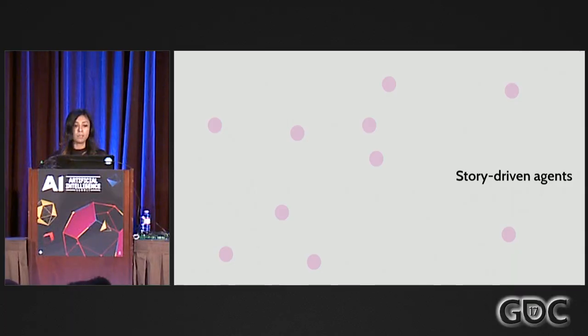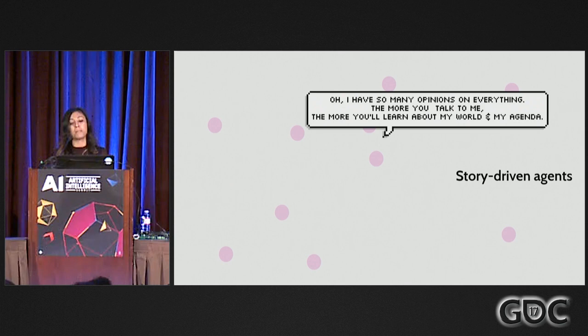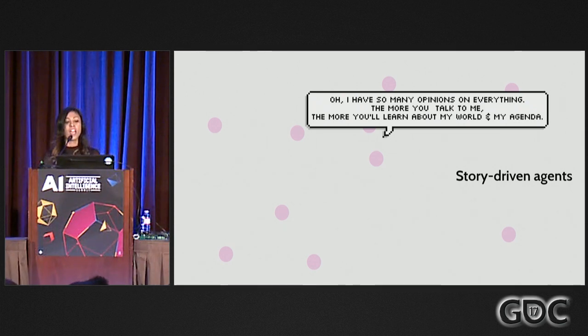So agent-driven stories rely on lots of agents, and the storytelling comes from noticing. On the other hand, there are also what I'd call story-driven agents — agents which have been crafted to know a lot about a particular story space. The way you learn about that story space is by interacting with that agent through dialogue or other interactions which act upon it.